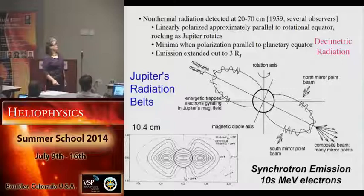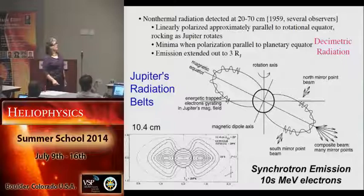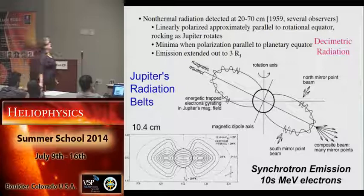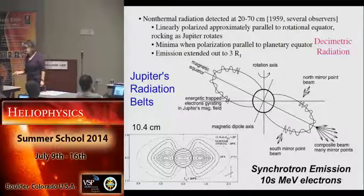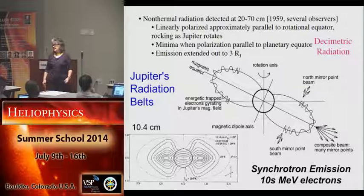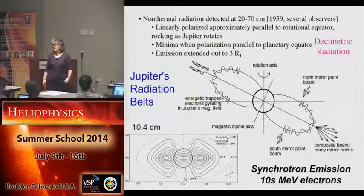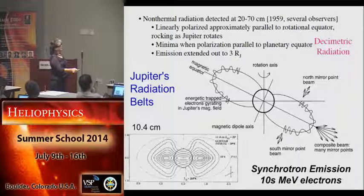I want to move on to other planets and talk about Jupiter. Around 1959, near the time of Explorer 1, we were starting to get observations of radio emission — a 10.4 centimeter radio emission from Jupiter. What we're seeing is synchrotron emission from tens of MeV electrons. These electrons are gyrating around the magnetic field — they are relativistic — and they're sending out synchrotron emission in beams perpendicular to the magnetic field. Over here you see emission from those particles that bounce up to high latitudes.